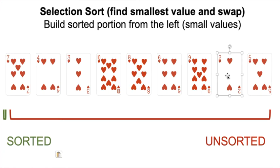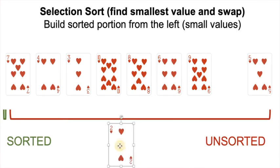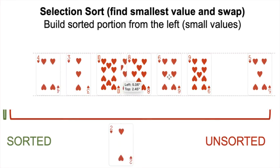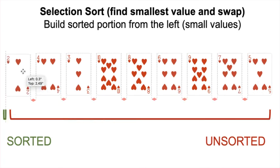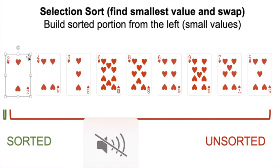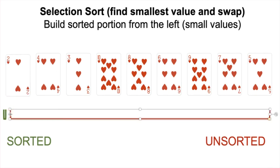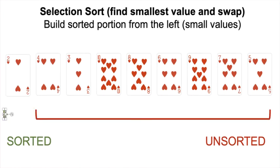Now we swap 2 with the first element in the unsorted portion of the array. We've shrunk our unsorted portion by 1 and grown our sorted portion by 1. That was the first pass of selection sort.